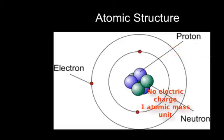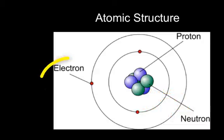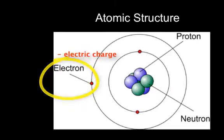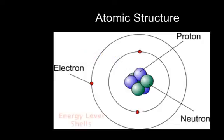Neutrons have no electric charge and also have a mass of one atomic mass unit. Moving around the nucleus are electrons, which are involved in the chemical energy of the atom. These electrons have a negative electric charge and occupy specific spaces around the nucleus called energy level shells.